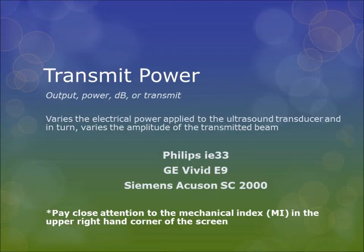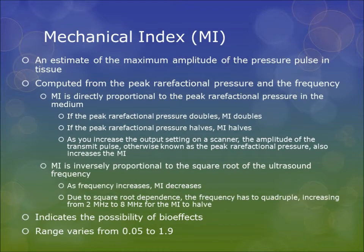Please pay close attention to the mechanical index, or MI, in the upper right-hand corner of the screen. Mechanical index is an estimate of the maximum amplitude of the pressure pulse in tissue. MI is computed from the peak rarefactional pressure and the frequency. MI is directly proportional to the peak rarefactional pressure in the medium — if the peak rarefactional pressure doubles, MI doubles; if it halves, MI halves. As you increase the output setting on a scanner, the amplitude of the transmit pulse (the peak rarefactional pressure) also increases the MI.